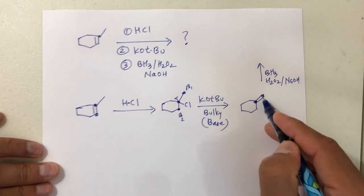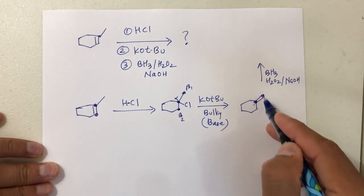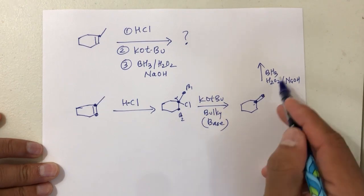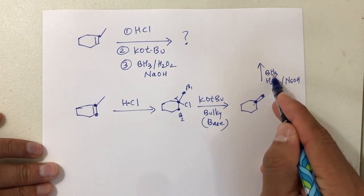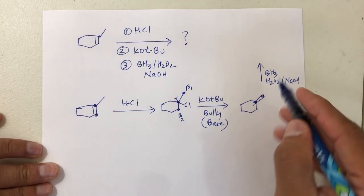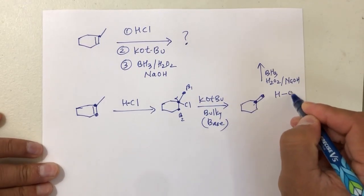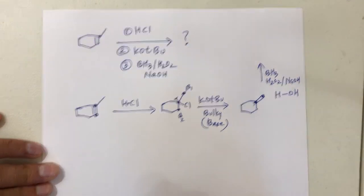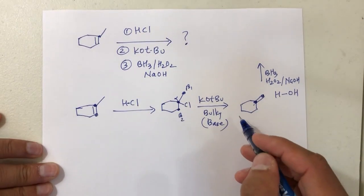Now we have a double bond and we are doing an addition reaction on it — anytime you start with a double bond, it's got to be addition. This is hydroboration. Hydroboration is adding H and OH, similar to hydration, but we go anti-Markovnikov.